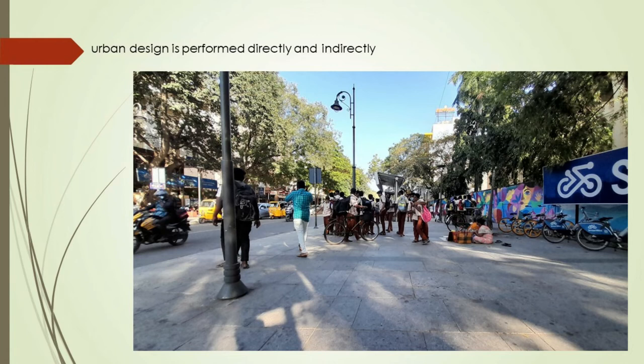Urban design is performed directly and indirectly. In the first case, the concern of urban design is the creation of a project that visualizes a specific solution — a visualization-based approach emphasizing drawings, modelings, renderings, or symbols to organize concrete spatial arrangements. In the second case, urban design is concerned with the normative sphere, i.e., the establishment of rules and guidelines that restrict or specify what urban actors can do independently to create future spatial solutions and arrangements they prefer. A legalistic approach is emphasized in the second case.